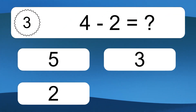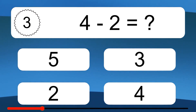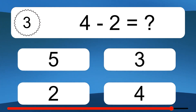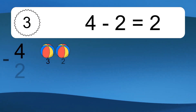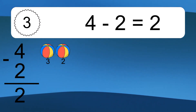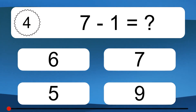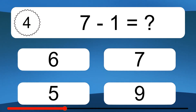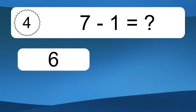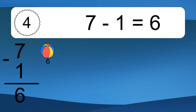4 minus 2 equals what? 4 minus 2 equals 2. Let's count it: 3, 2. 7 minus 1 equals what? 7 minus 1 equals 6. Let's count it: 6.